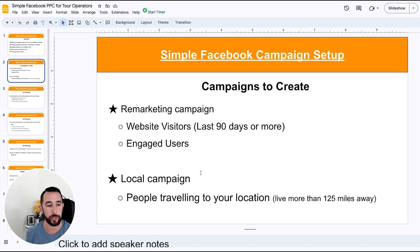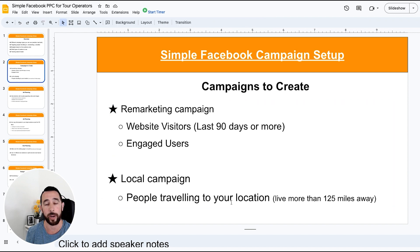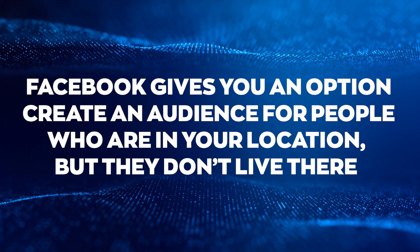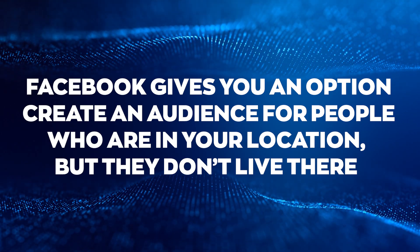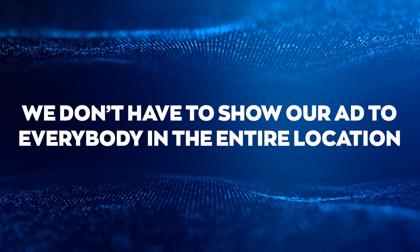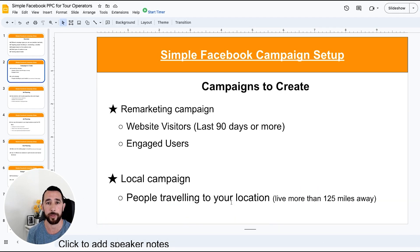The other campaign is what we call a local campaign. Generally, we're targeting people who are traveling to your location. Facebook gives you an option to create an audience for people who are in your location but don't live there — their criteria is that people live more than 125 miles away from that location. So it's great for capturing people traveling from out of town into your location. We can get in front of those people alone without showing our ad to locals, which can save you a ton of money on ad spend.